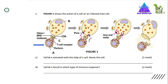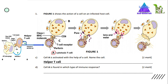Question C: Cell A, which is cytotoxic T cell, is activated with the help of a cell. Name the cell. The answer is helper T cell. Helper T cell will secrete interleukin-2 to activate cell A, which is cytotoxic T cell.